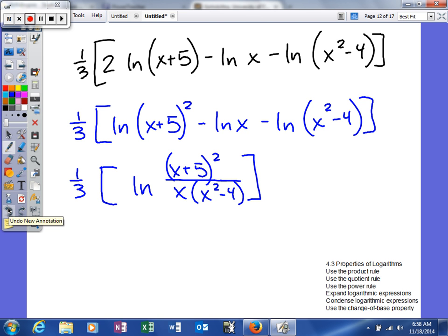Now what we can do is we can take this nice little coefficient and write it as the exponent of the logarithm. It's going to end up being an exponent of one-third, so what that means is it's going to be the cube root of all this fun stuff. So that is the condensed form for that logarithm.